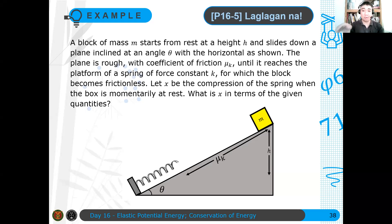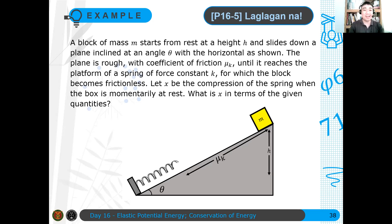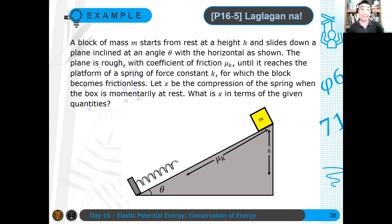A block of mass m starts from rest at a height h and slides down a plane inclined at an angle theta with the horizontal. The plane is rough with coefficient of friction mu k until it reaches the platform of a spring of force constant k, for which the block becomes frictionless. So there are two regions: one part of the plane is rough, and the other part where the spring resides is smooth. Let x be the compression of the spring when the box is momentarily at rest. What is x in terms of the given quantities m, h, theta, mu k, and k?